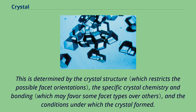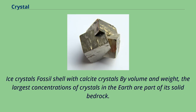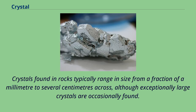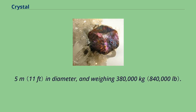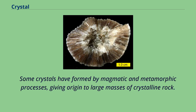By volume and weight, the largest concentrations of crystals in the Earth are part of its solid bedrock. Crystals found in rocks typically range in size from a fraction of a millimeter to several centimeters across, although exceptionally large crystals are occasionally found. As of 1999, the world's largest known naturally occurring crystal is a crystal of beryl from Malakialina, Madagascar — 18 meters long and 3.5 meters in diameter, weighing 380,000 kilograms. Some crystals have formed by magmatic and metamorphic processes, giving origin to large masses of crystalline rock.